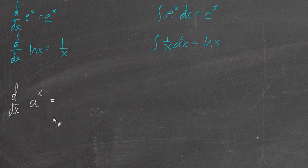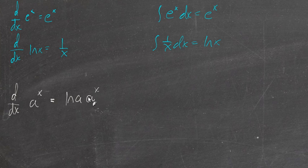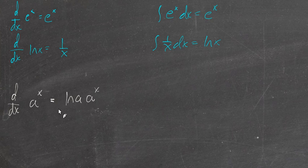Okay, so the derivative of a to the x is the natural log of a times a to the x. So a to the x makes an appearance in its own derivative, and you just take it and multiply by whatever the value of the natural log of a is.